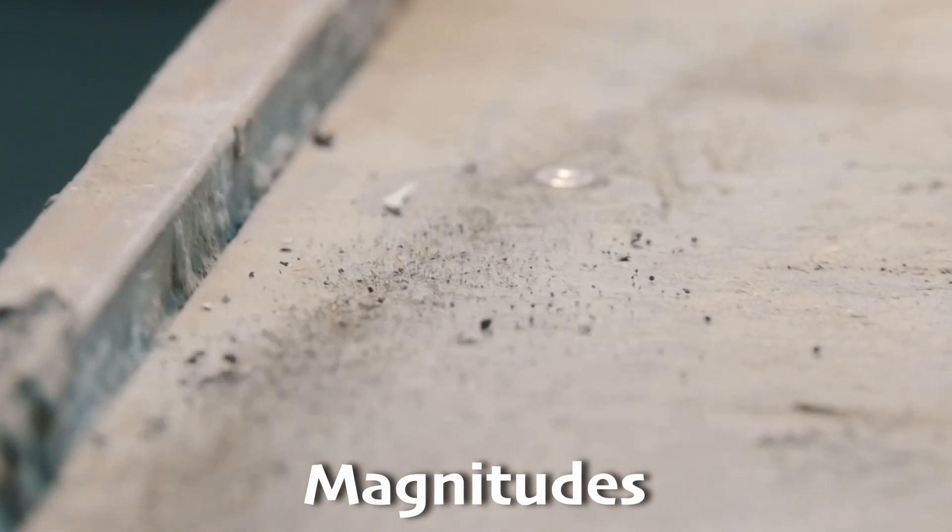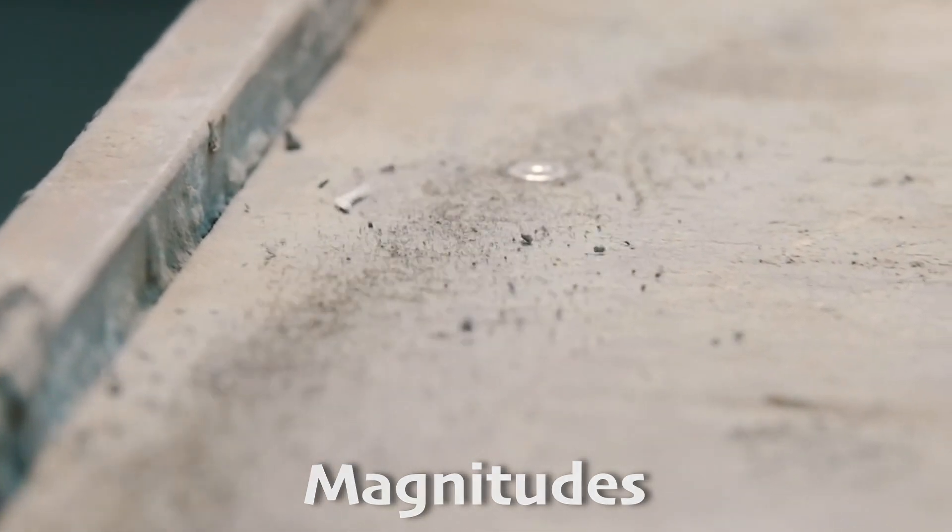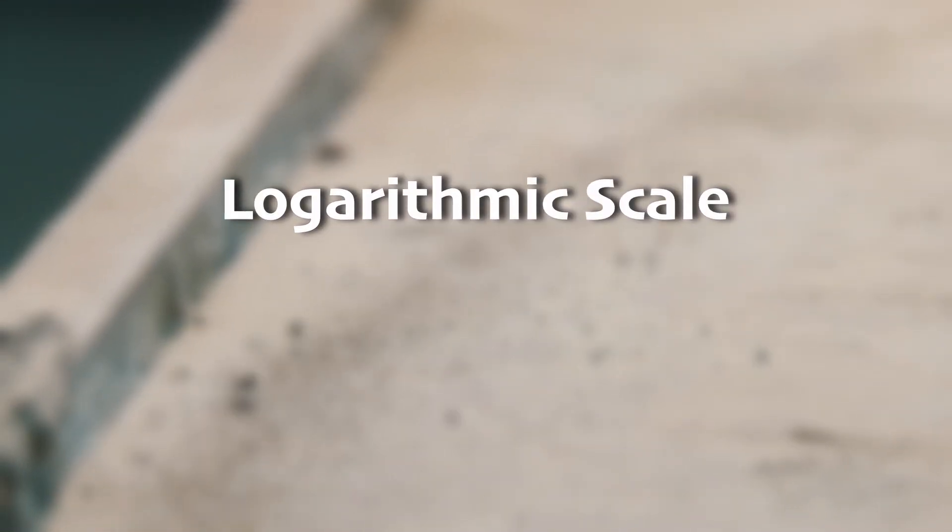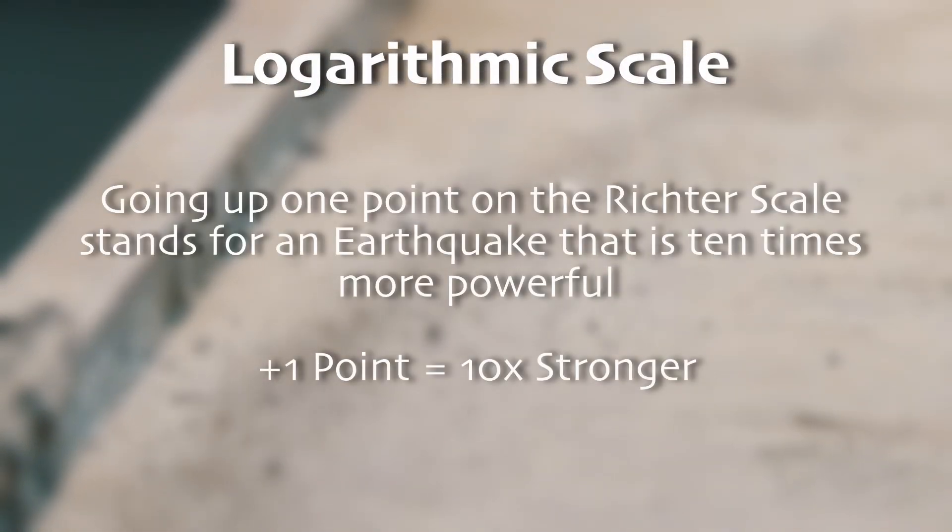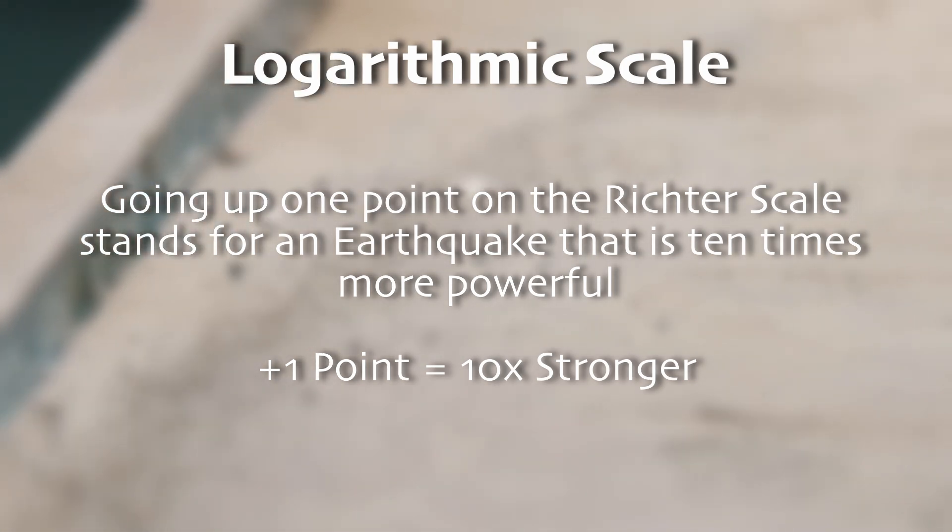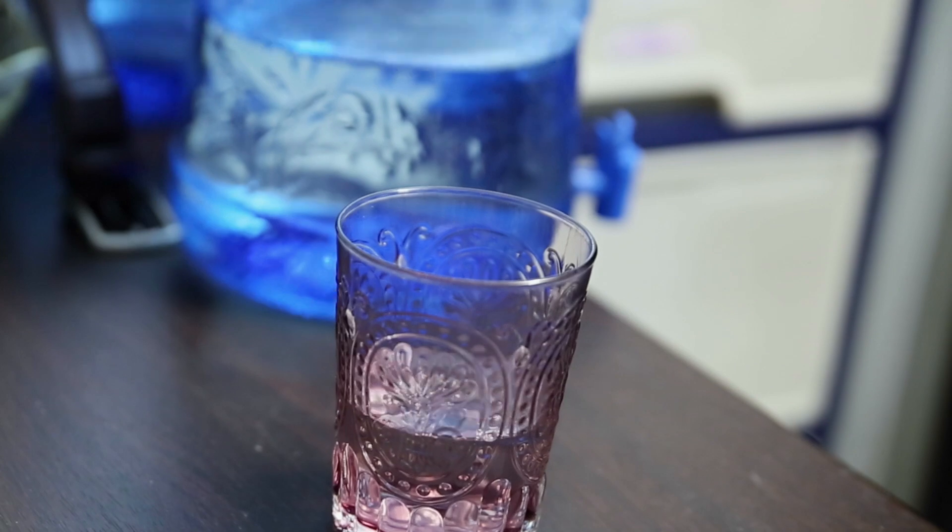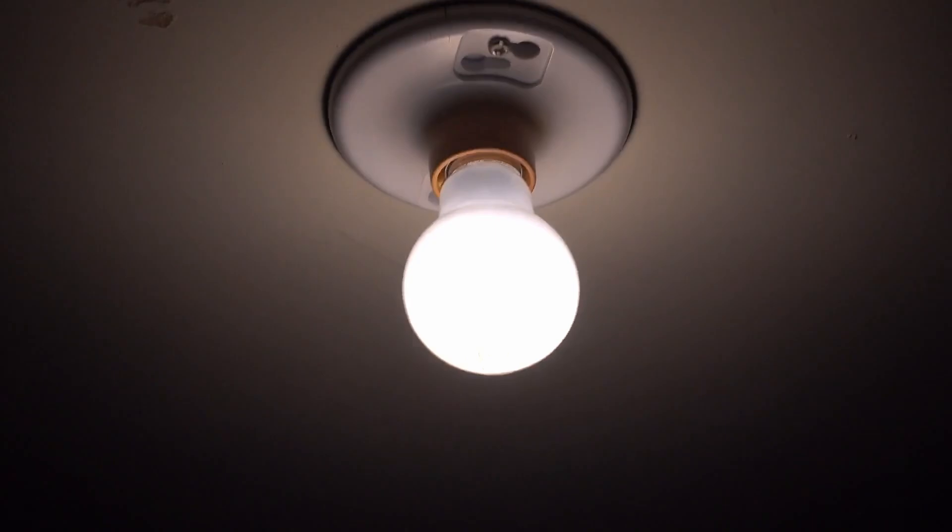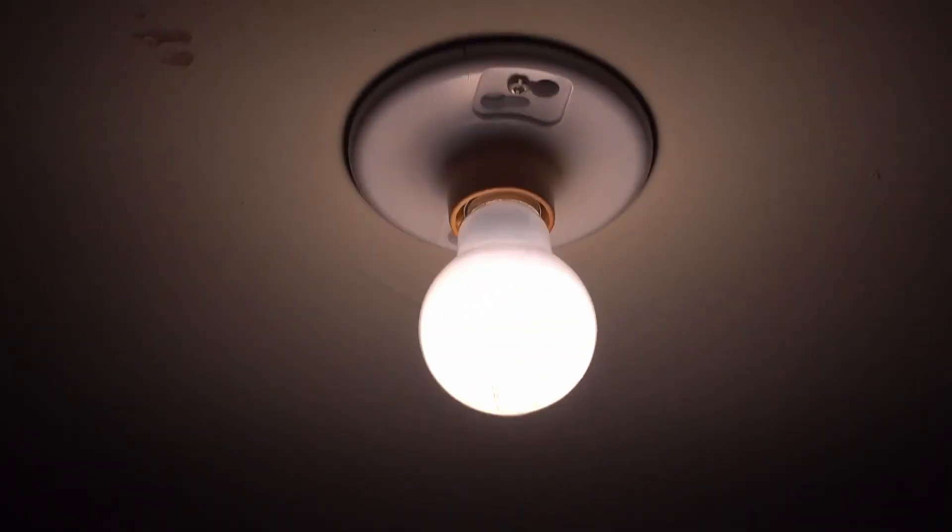One important thing to keep in mind is that the Richter scale is a logarithmic scale. This is an idea you'll learn about in math where going up one point on the Richter scale actually stands for an earthquake that is 10 times more powerful. So if you think an earthquake with magnitude 5 is no big deal, a magnitude 6 is 10 times stronger. Yikes.